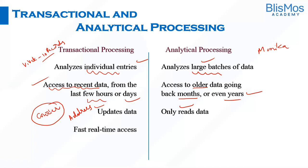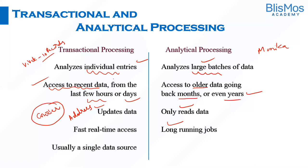In transactional processing there is real-time data access. In analytical processing we have long-running jobs, because the amount of data being handled is much larger. Transactional processing usually has a single data source. Analytical processing has multiple data sources — for example, to check why revenues were low this month, Monica had to pull data from previous years across multiple systems.